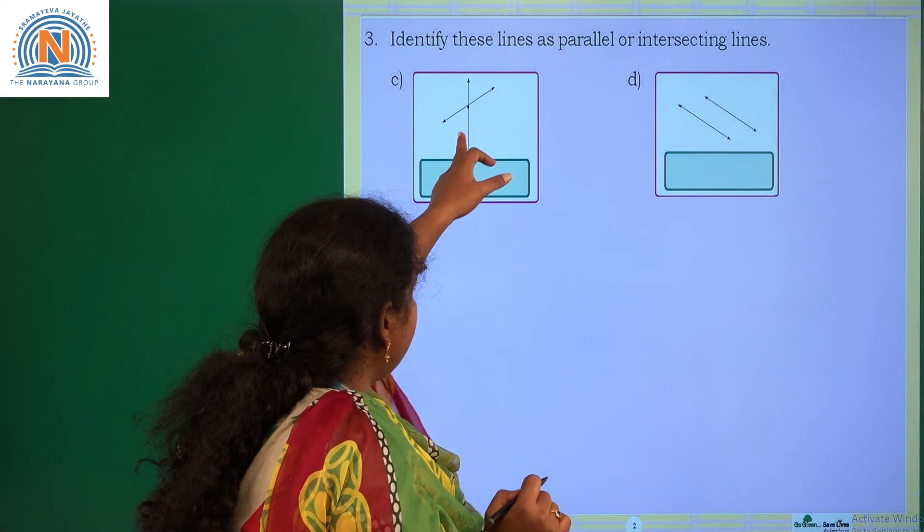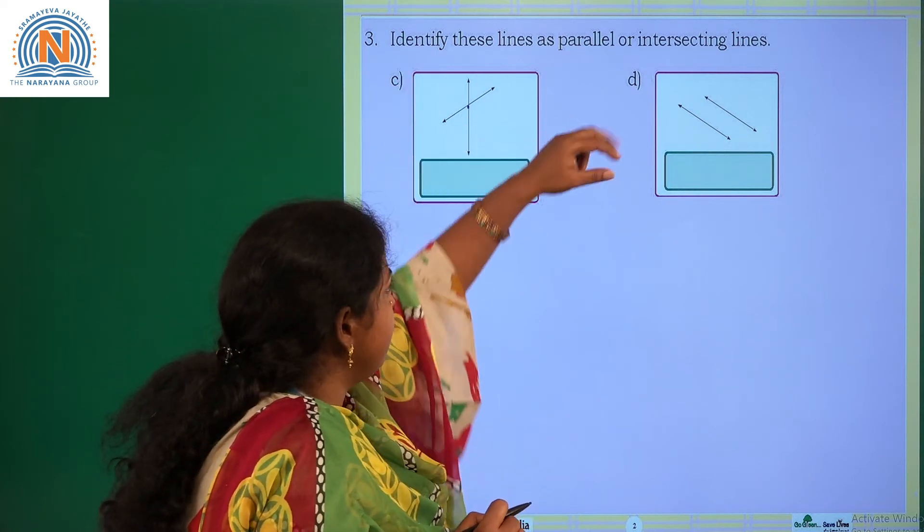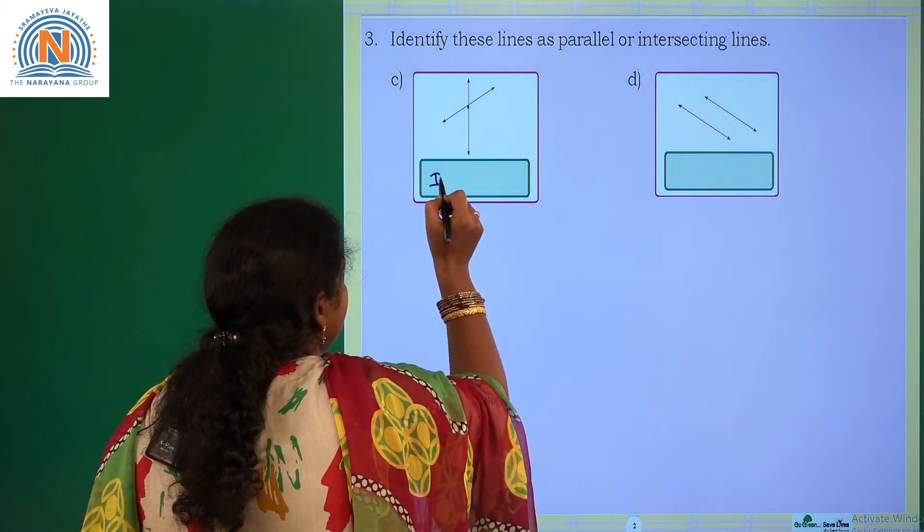If the two lines are intersecting at one point, then those two lines are known as intersecting lines. So they are intersecting lines.